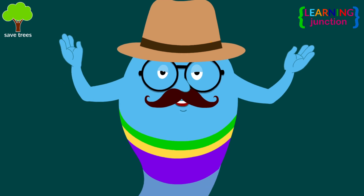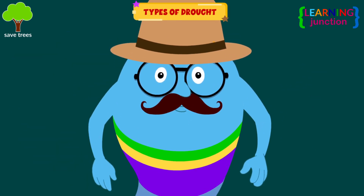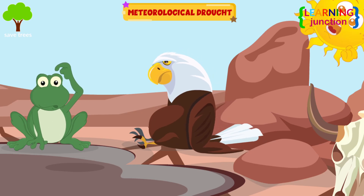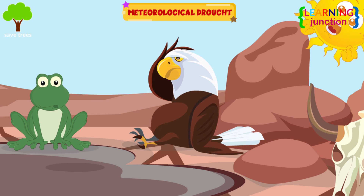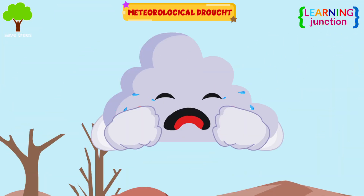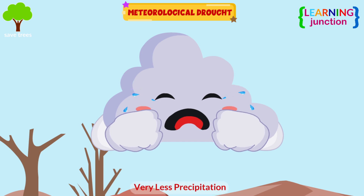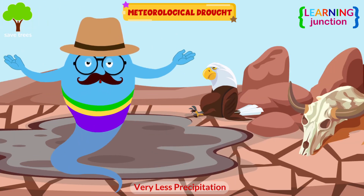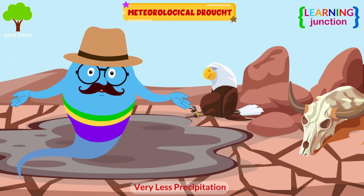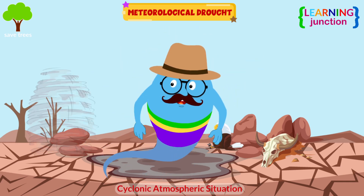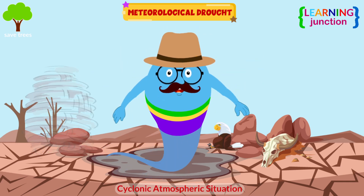Let me show you the types of drought. Meteorological drought — this area is mostly dominated by a dry weather pattern. When an area receives less than its average precipitation, meteorological drought happens. It is mainly linked with a cyclonic atmospheric situation.